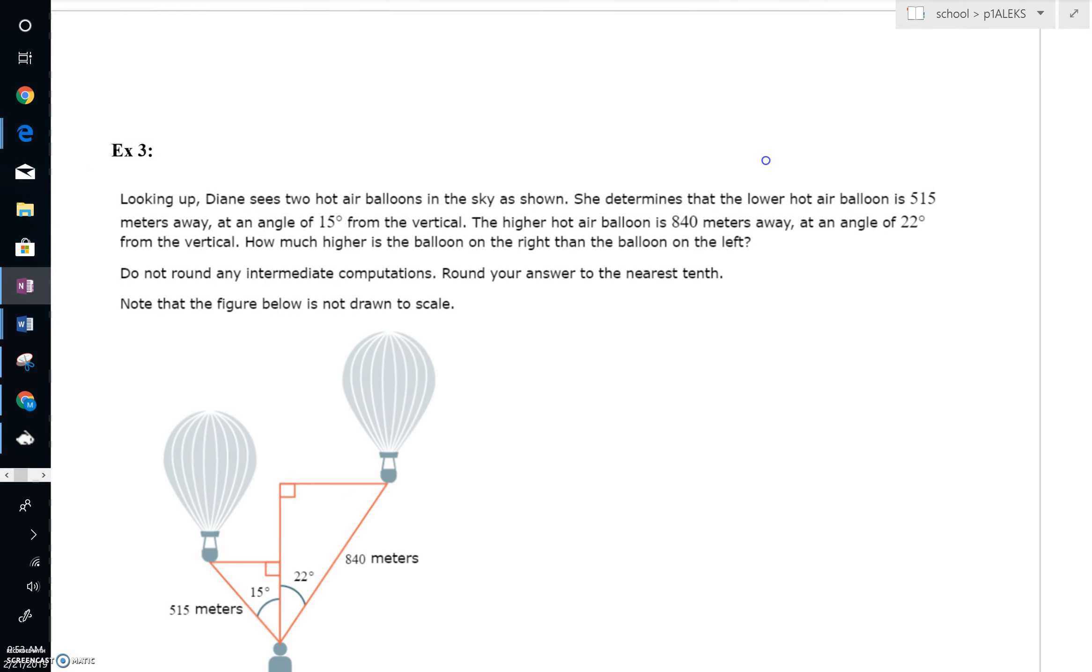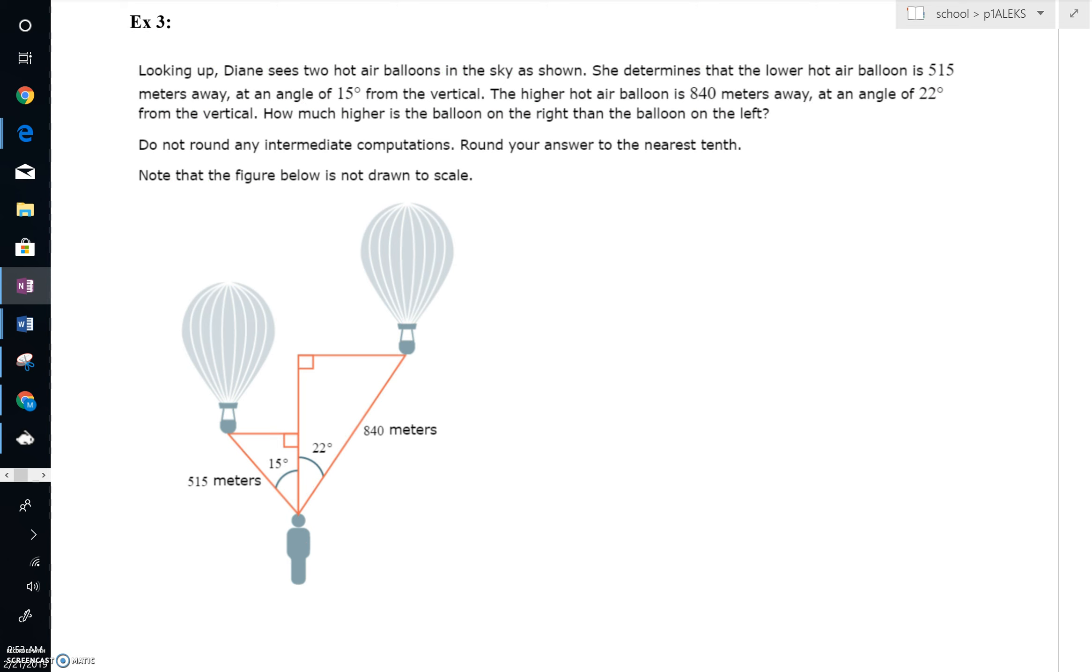One more problem, and then we're through. Again, I think stating the obvious, you can see from the very beginning, there is one triangle. Here's that common theme over and over again. You're going to see two triangles. And just reading here, you know you're going to find two missing pieces and work from there. Looking up, Diane sees two hot air balloons in the sky. She determines the lower hot air balloon is 515 meters away, an angle of 15 degrees from the vertical. The higher hot air balloon is 840 meters away at an angle of 22 degrees. So what they want you to do is find out how much higher the balloon on the right is than the balloon on the left.